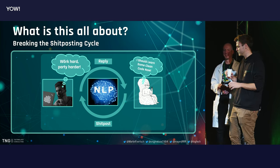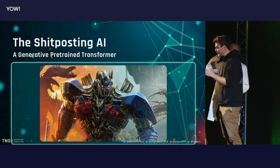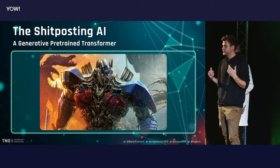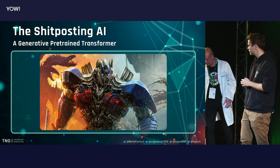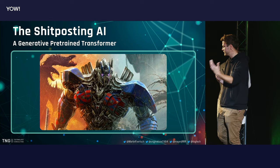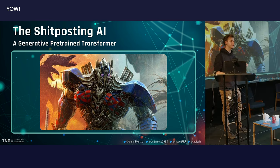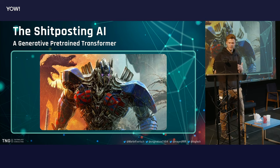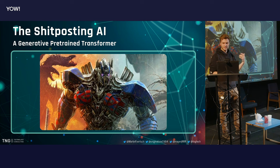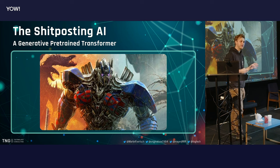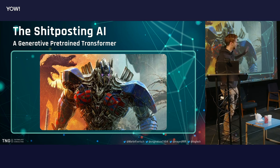That was basically the idea for the shitposting AI. For our floating NLP brain, we chose something called GPT from OpenAI — Generative Pre-trained Transformer. Generative means we generate text — we want to generate shitposts. Pre-trained means it comes pre-trained on a huge dataset from the internet, so it knows a bit about how conversations work. And obviously anything it says is going to be true because it's from the internet. Spoiler alert: the transformer part is not Optimus Prime — we just put that in for clickbait.